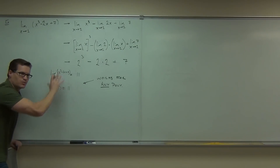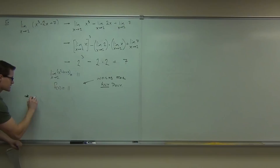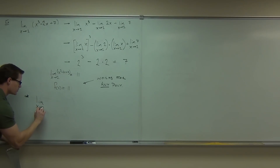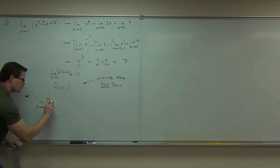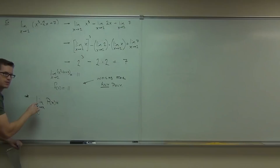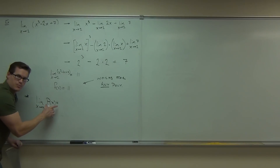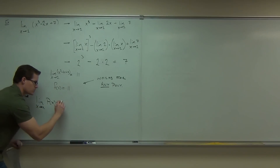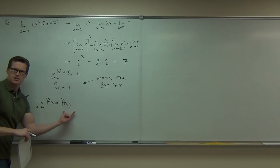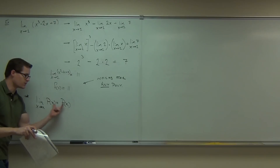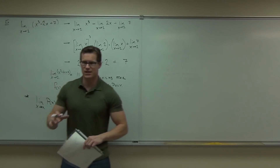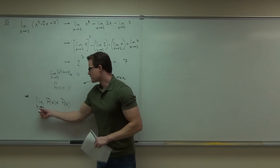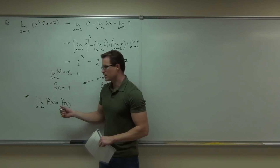Here's basically what all this says: the limit as x approaches a of some polynomial P(x) equals P of A. What does P of A mean? To evaluate the function at that point. It says evaluate the function at that point. Basically, here's what it says in English: to find the limit of a polynomial, just plug in the number.